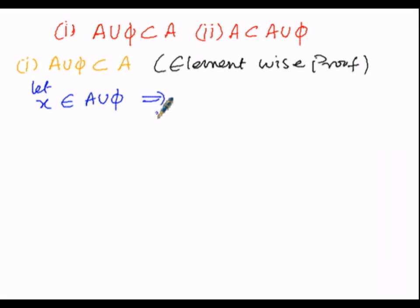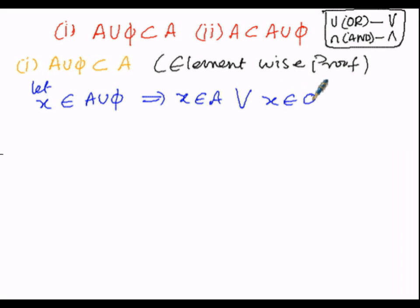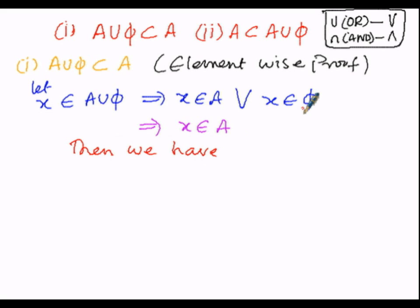X belongs to A union φ means X belongs to A or X belongs to φ. Since the empty set does not consist of any elements, X will not be in the empty set. So we can avoid X belongs to φ, and write only X belongs to A.